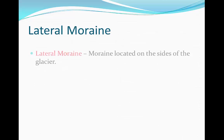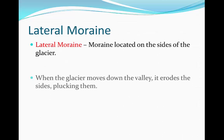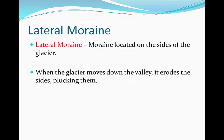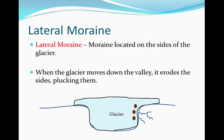The first type is lateral moraine. This is moraine located on the sides of the glacier. When the glacier moves down the valley, it erodes the sides by plucking them and removing sediment. That sediment is then trapped inside the glacier, as shown by the diagram here.